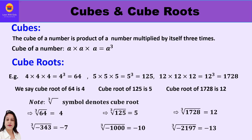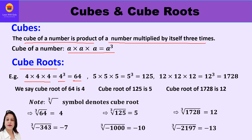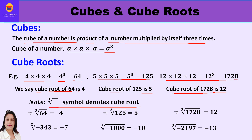In the previous video we learned that the cube of a number is the product we get when that number is multiplied by itself three times. So if we take 4 and multiply it three times we get 4 cube, which is 64. Now, the cube root of 64 is 4. Similarly, 5 multiplied three times gives 5 cube, that is 125, so the cube root of 125 is 5. Also, 12 cube is 1728, therefore the cube root of 1728 is 12.